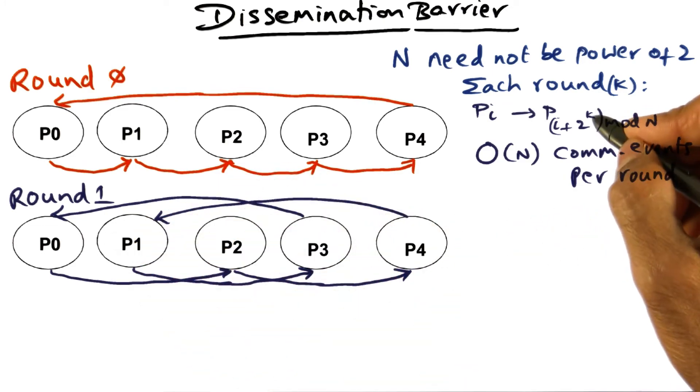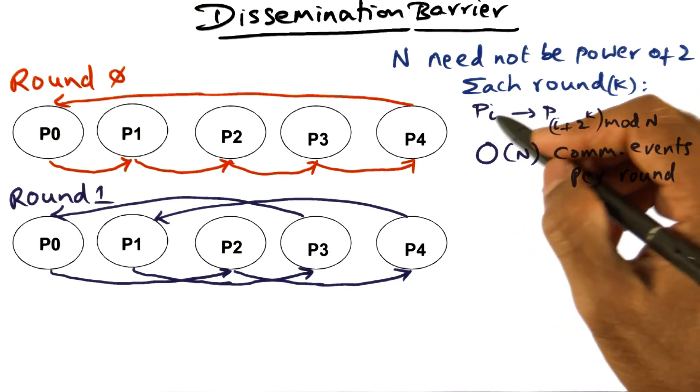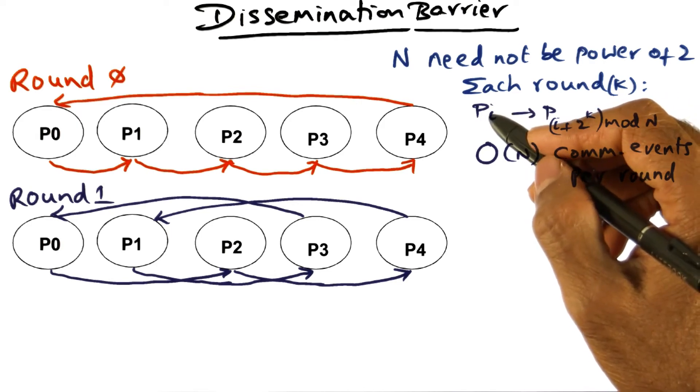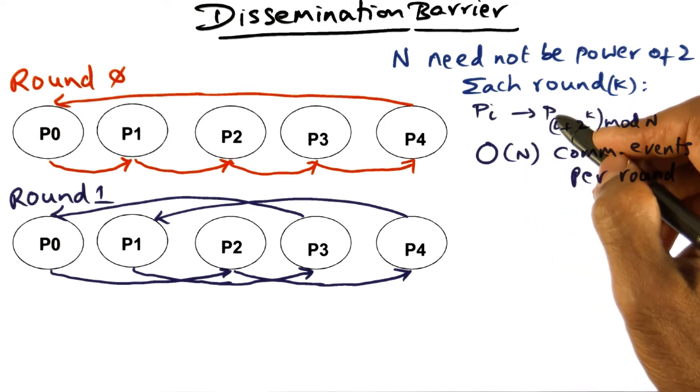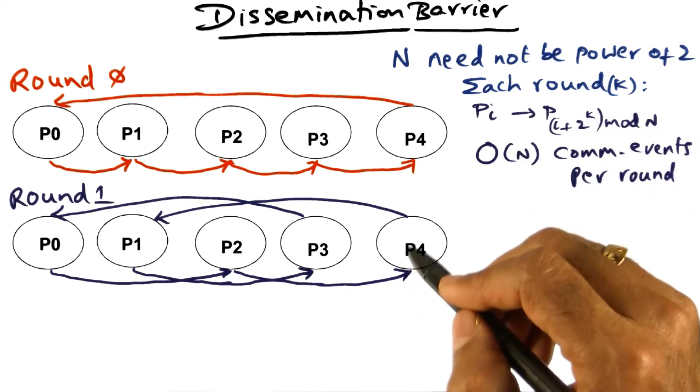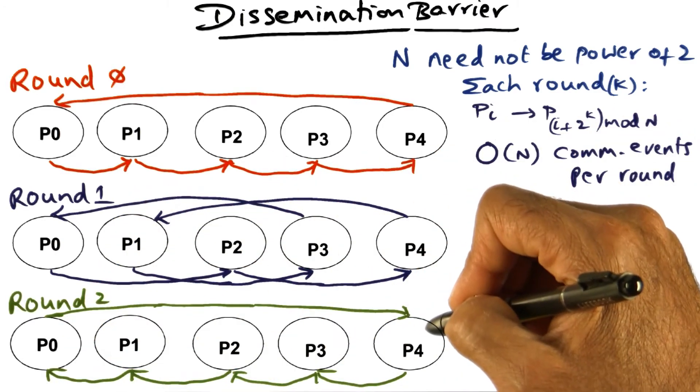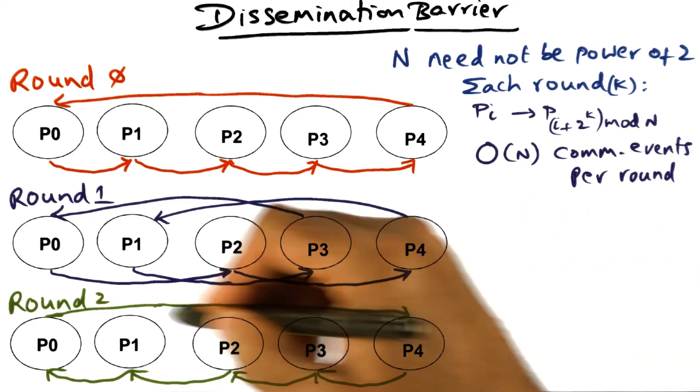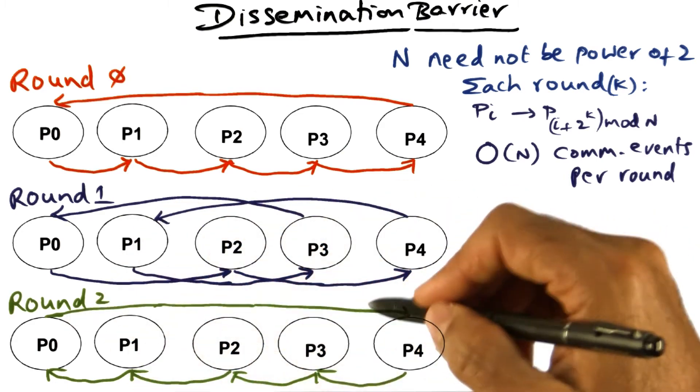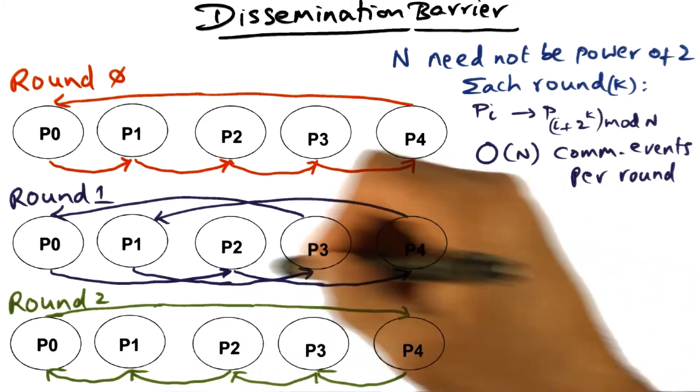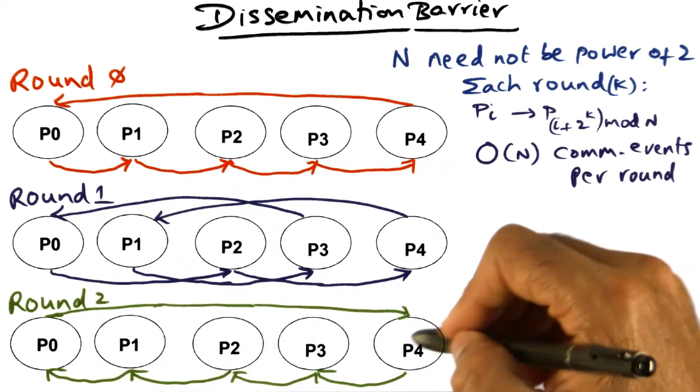So in the next round, meaning round number 2, k is equal to 2. And therefore, what we're going to do is every one of these processors is going to be choosing a neighbor that is 4 distant from itself. So in other words, p0 is going to send a message to its neighbor that is 4 distant, that is p4. p1 is going to send it to 4 distant, which means if you wrap it around, it's going to be p0 and so on.